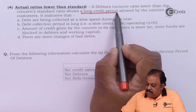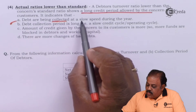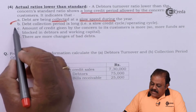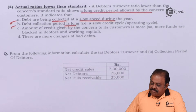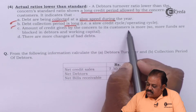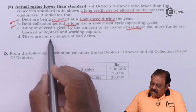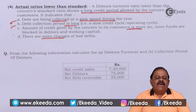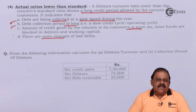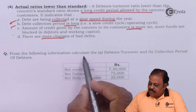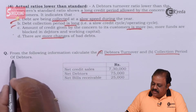A debtors turnover ratio lower than the concern's standard ratio shows a long credit period allowed by the concern to its customers. It indicates that debts are being collected at a slow speed during the year — the debt collection period is long, resulting in slow credit cycles and operating cycle. The amount of credit given to customers is more, so more funds are blocked in debtors and working capital, and there are more chances of bad debts.